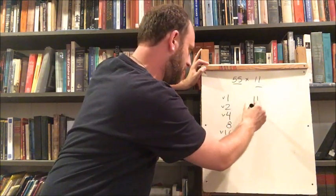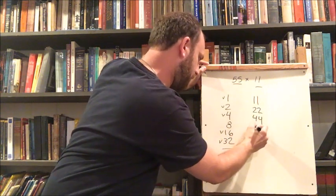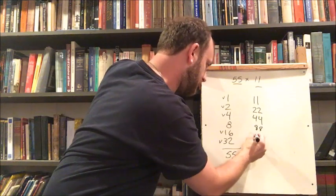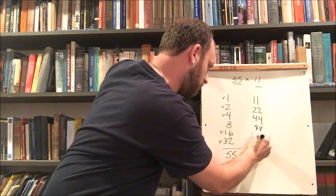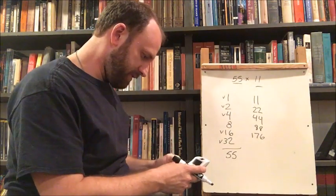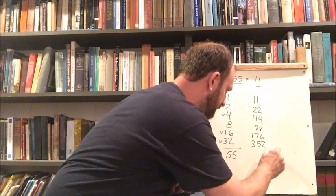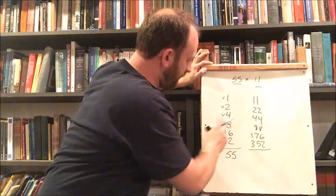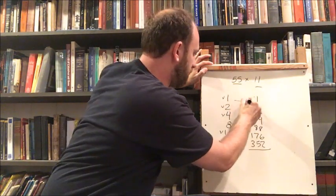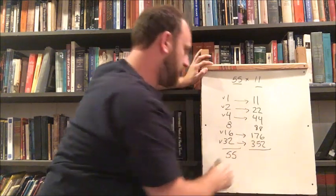So start with 11. Double that is 22. Then 44. Doubling 44 is 88. Doubling 88 is 176. And because I don't trust my math doubling 176 is going to give us 352. All right. So now we're going to line up the numbers we took from the left-hand column to the right.